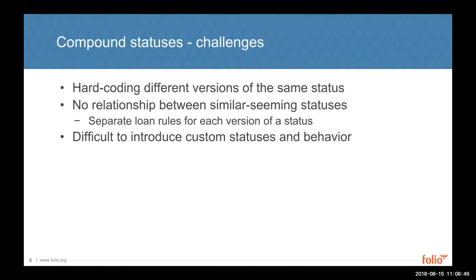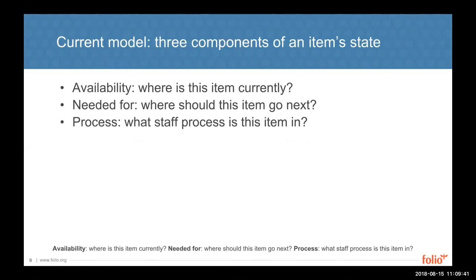The compound approach also made it more difficult to add custom statuses down the line, since you'd have to create different versions based on whether items were requested and define behavior for each. While custom status functionality isn't in imminent development, we were aware this approach made it hard to describe all real-world states an item can be in, including ones unique to particular institutions. So after discussing this at great length, we realized we needed a new, more flexible model. The best approach was not to consolidate all information in one field but to take a modular approach with separate fields—referred to in SIG discussions as availability, needed for, and process.